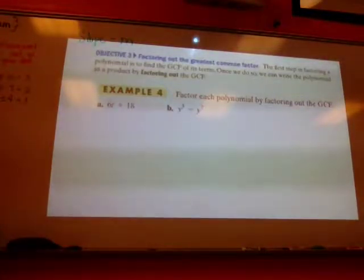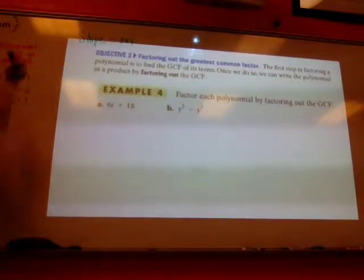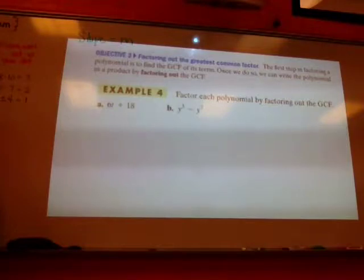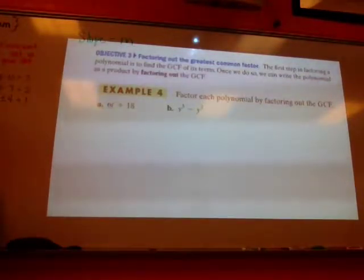Alright, so you know how when we distribute, we're multiplying something into the parentheses, and we're getting like a binomial in return? Well, this time we want to take the binomial and go, okay, what could I have multiplied both of these by to get this answer?